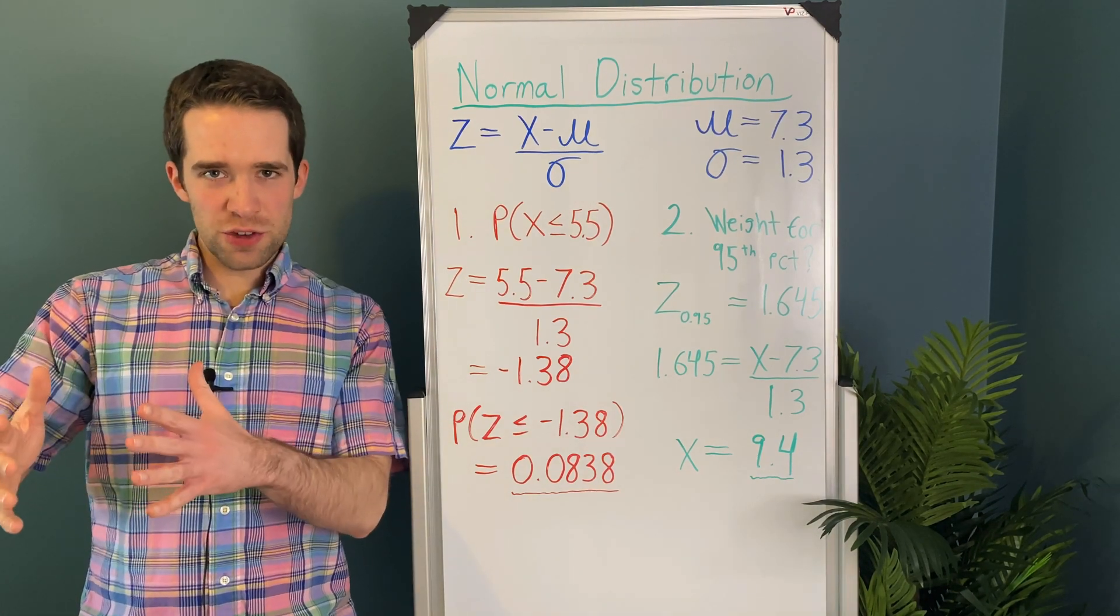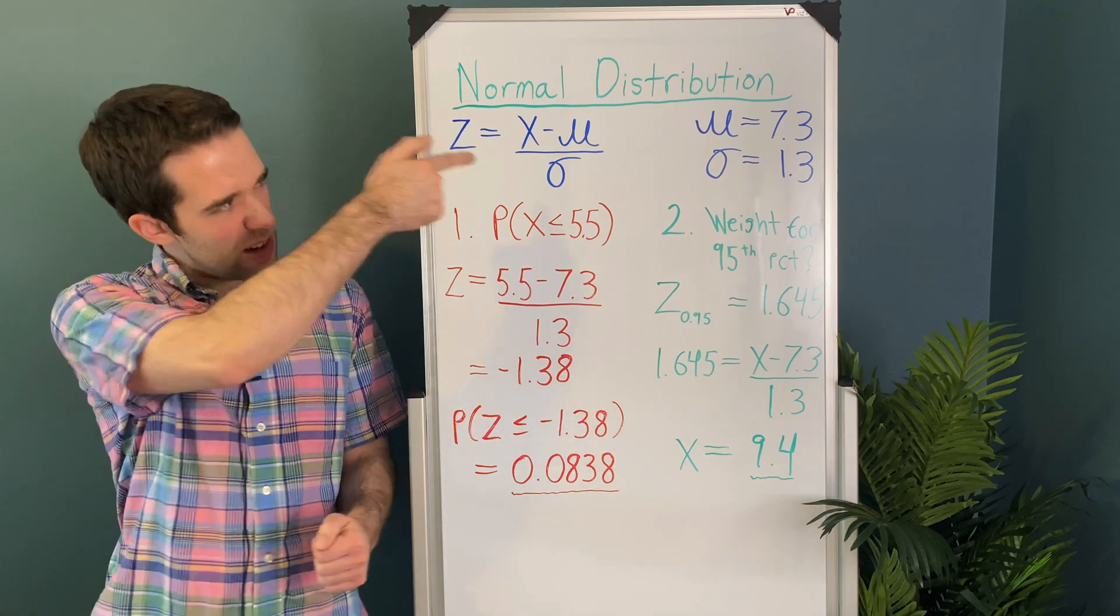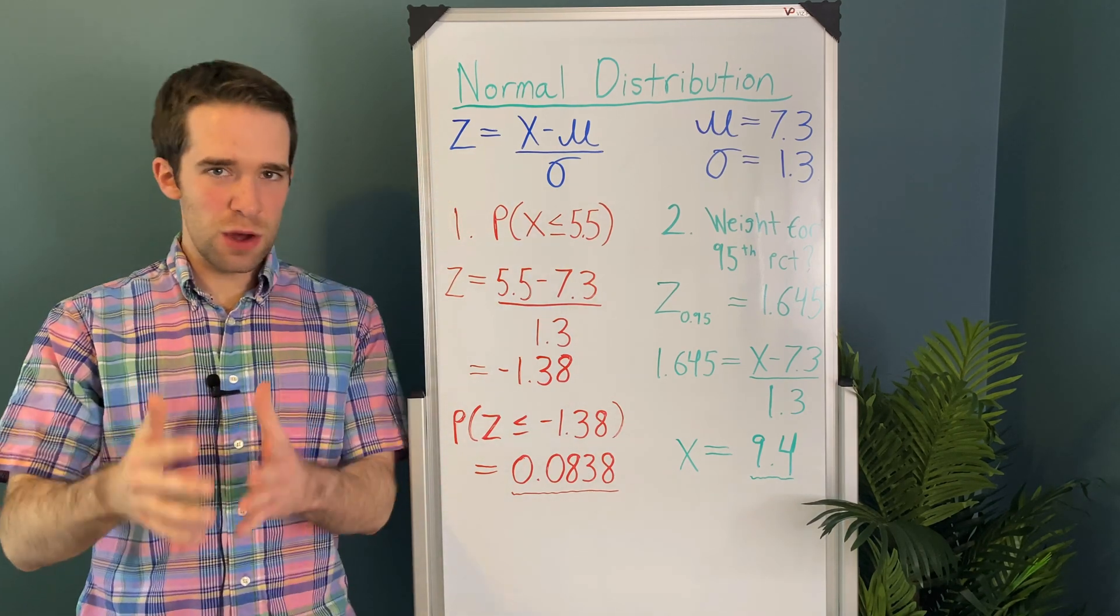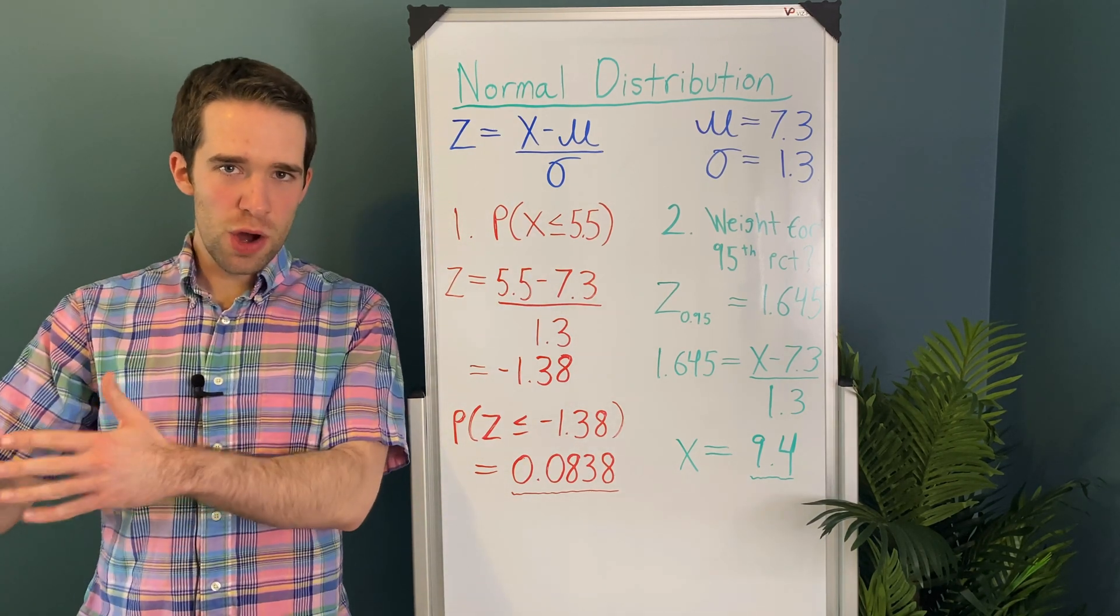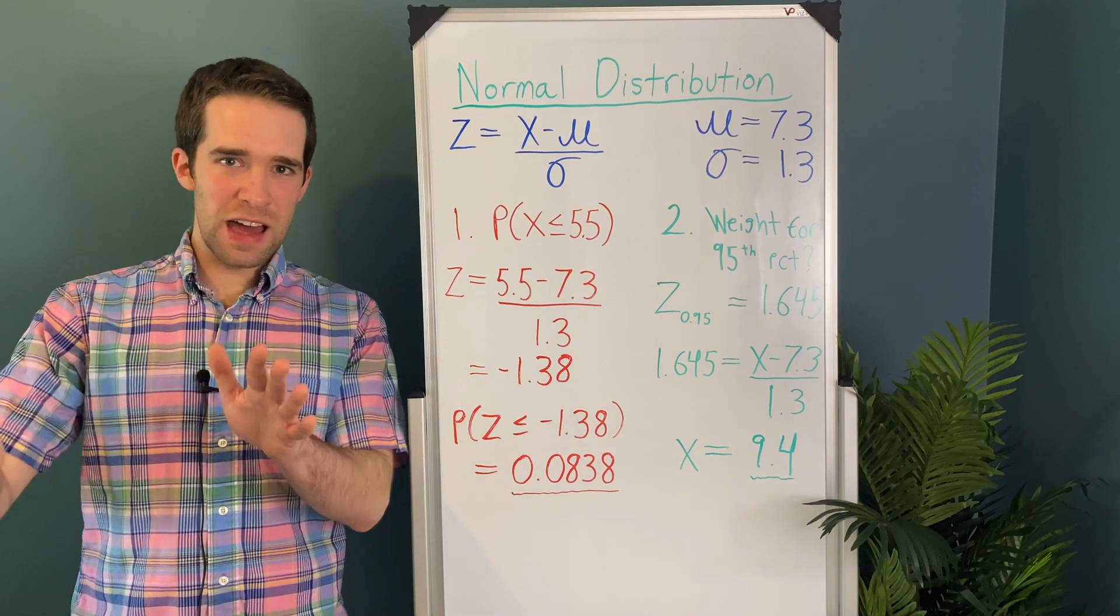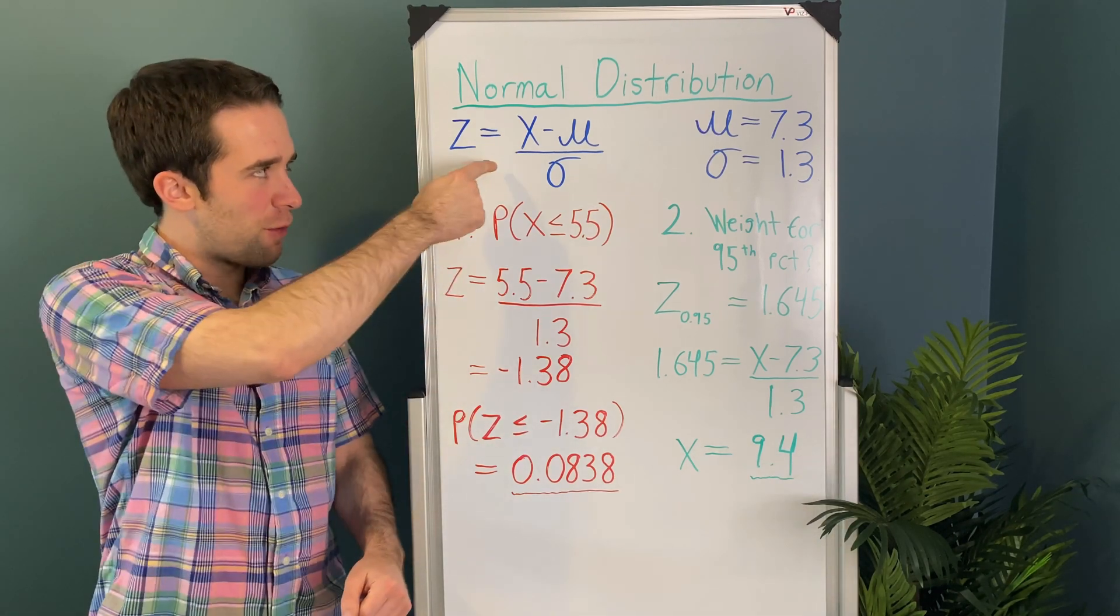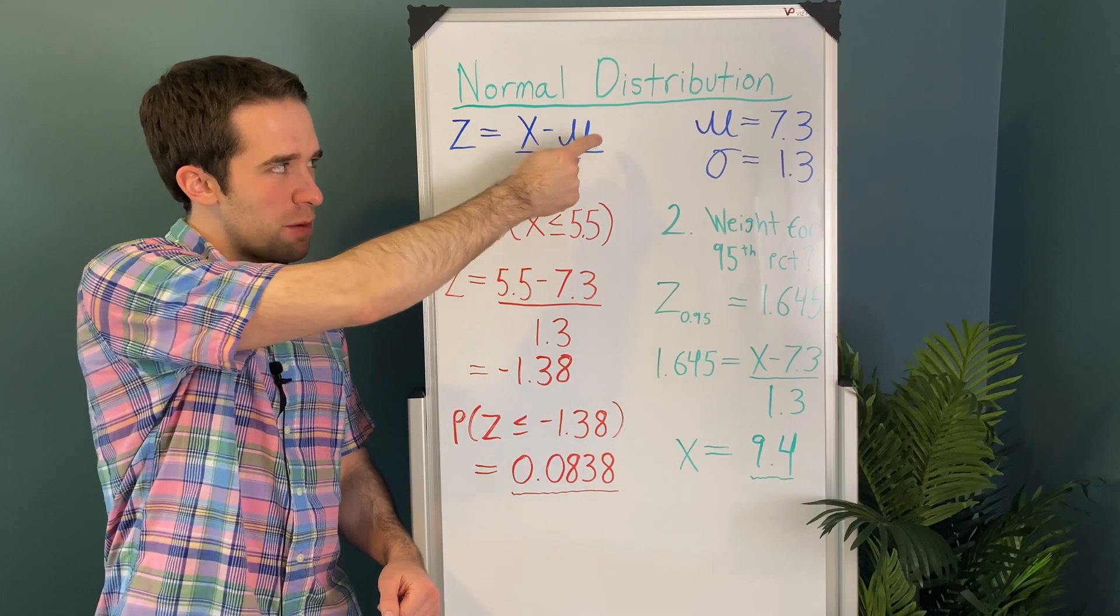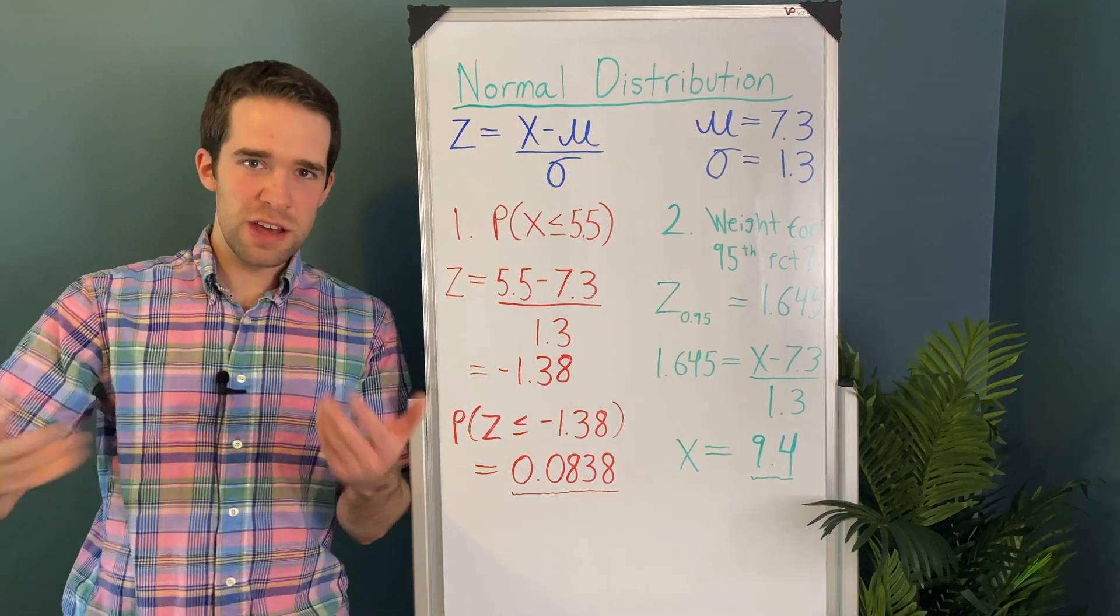So for both of these questions, we're going to make use of our z-score formula, z equals x minus mu over sigma. And this basically, again, this just tells us how far our measurement is away from the mean in standard deviations.